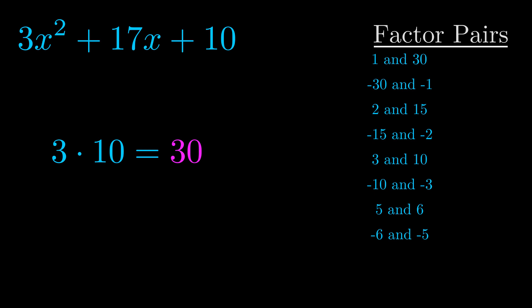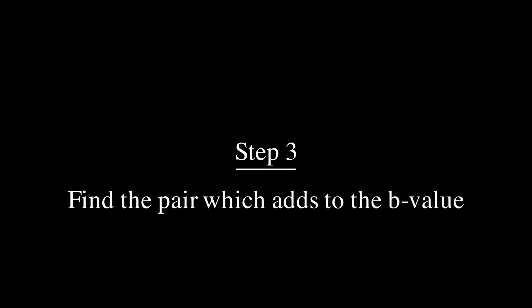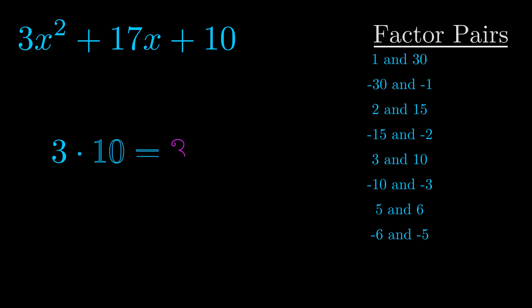Now once you have these factor pairs, the goal is to find which of these pairs adds to the b value. The b value is the coefficient on the x term. That's the middle term, the one that we haven't done anything with yet. And really this is the only factor pair that we need.